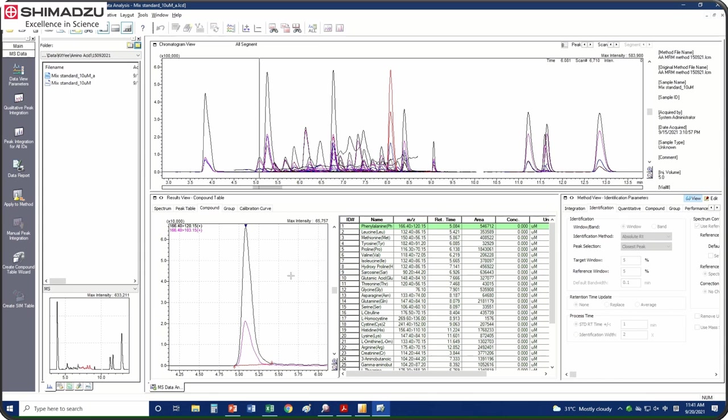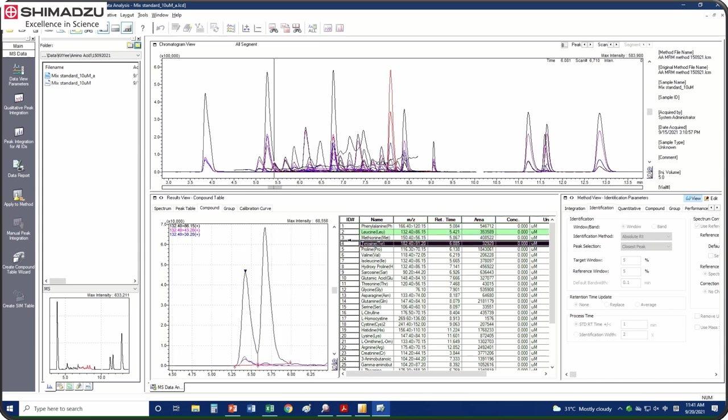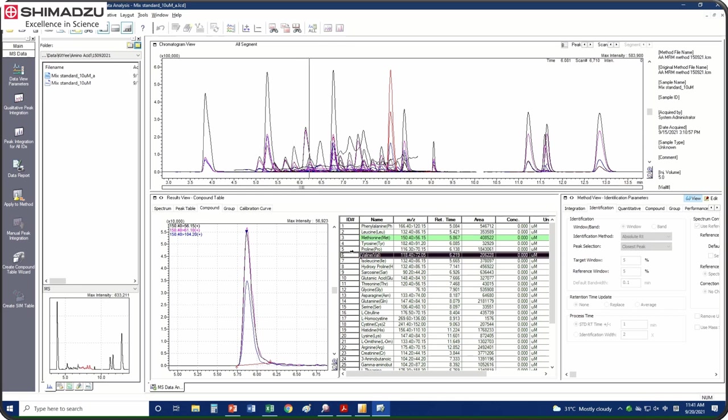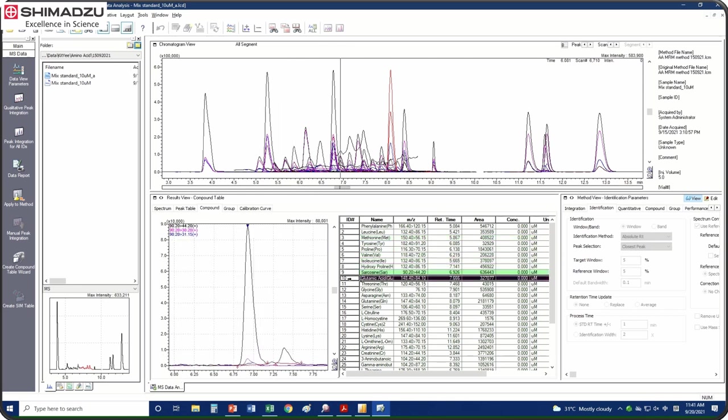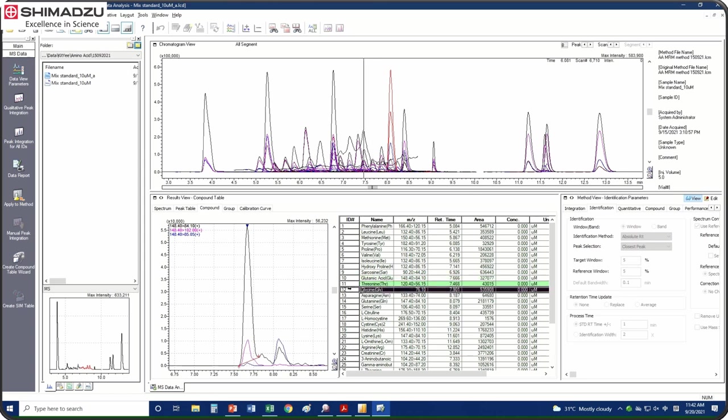To view individual MRM chromatogram, open LabSolutions post-run window. Double-click to open the data file. Click integration by all IDs icon.